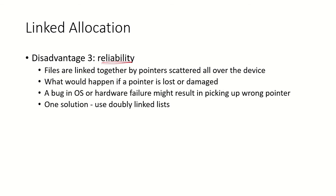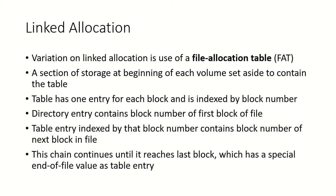The third disadvantage is reliability. Since files are linked by pointers scattered across the device, if a block gets damaged or a bug in the OS causes a wrong pointer to be picked up, the chain is broken and data is lost. One way to handle this is to use a doubly linked list, where each block has a pointer to both the next and previous blocks, improving the chance of recovering addresses even if one block is corrupted.